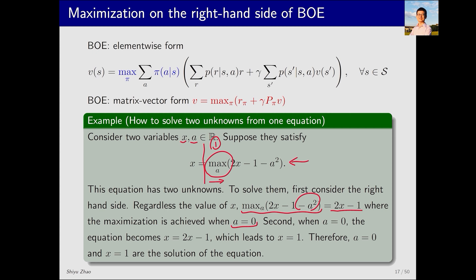What is the second step? The second step is to substitute this optimal value, where a equals zero, back into the right-hand side. Then the right-hand side actually becomes 2x-1 and the left-hand side is x. This is very easy to solve and we know the solution is x equals 1. So, by these two steps, we have obtained the solution as a equals zero and x equals 1. This idea can be applied to solving the Bellman optimality equation.